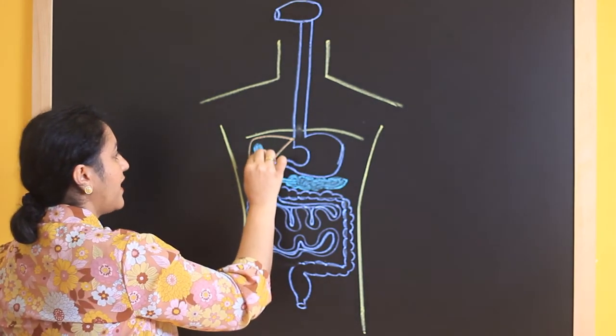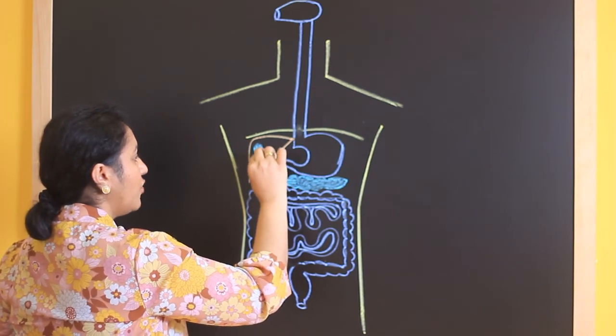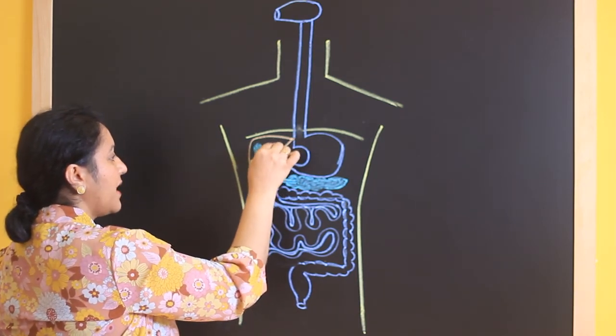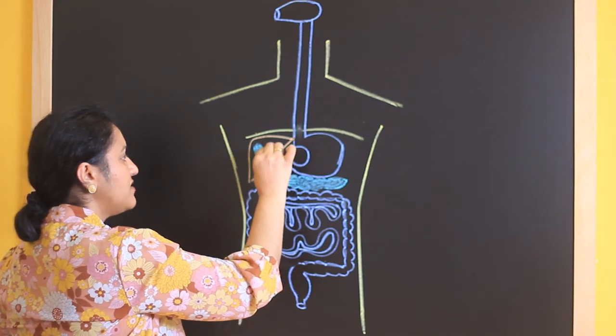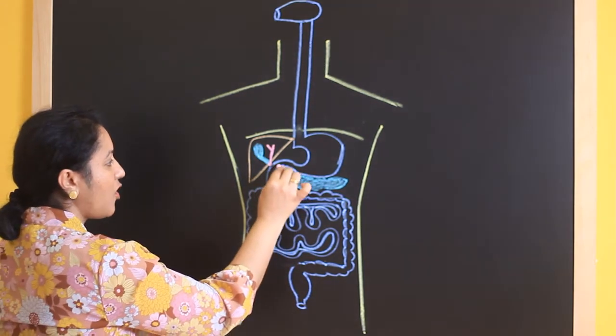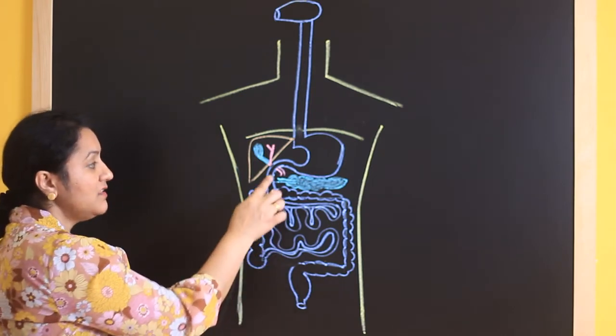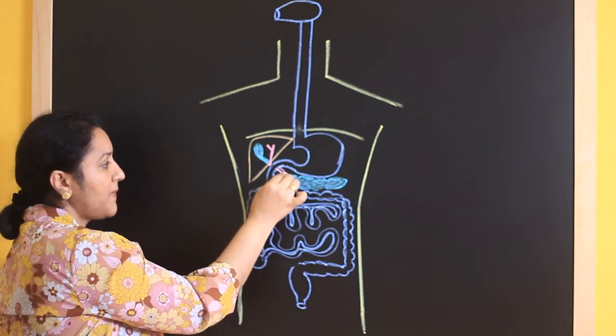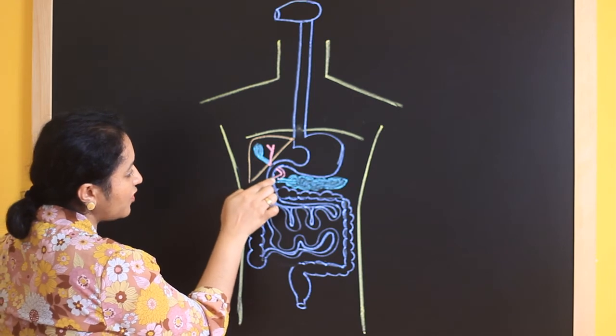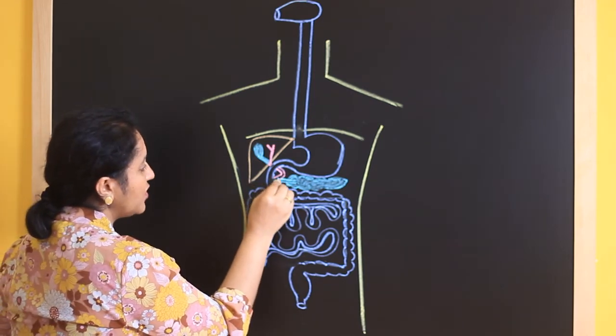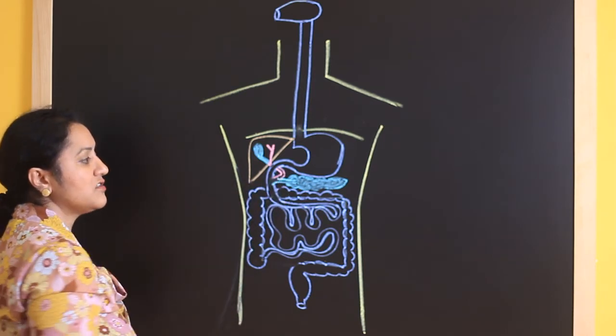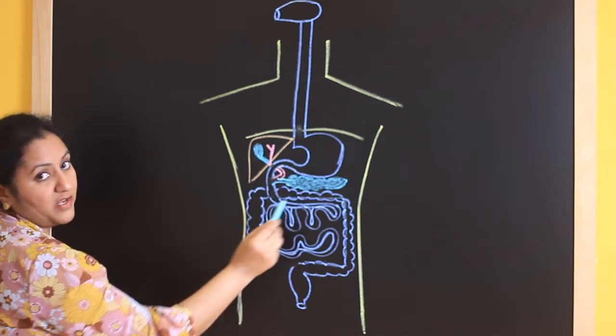This is the gallbladder which stores bile. It has a duct on its own which is called as a cystic duct. Now this is a duct which comes from the liver. They are called as hepatic duct. Now this hepatic duct and this cystic duct join together like this and forms a common duct. And this common duct is called as a common bile duct. This common bile duct joins with the pancreatic duct and open together like this into the small intestine. So you can see here this is a common duct where pancreatic juice as well as the bile juice has been secreted into the small intestine. This part is very very important.